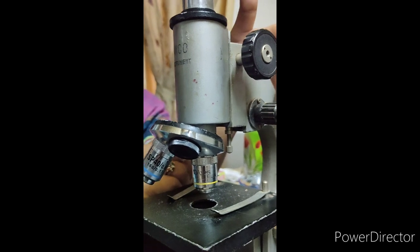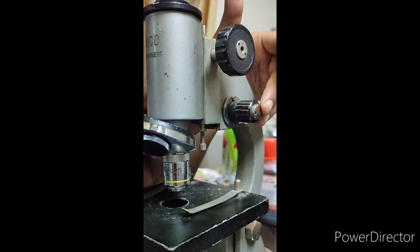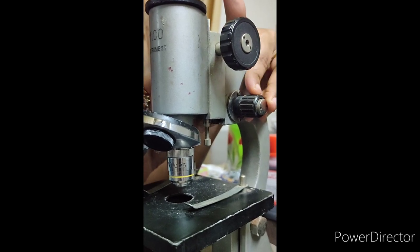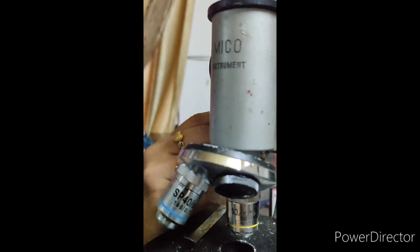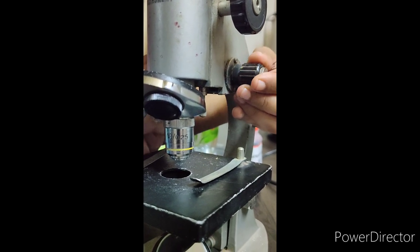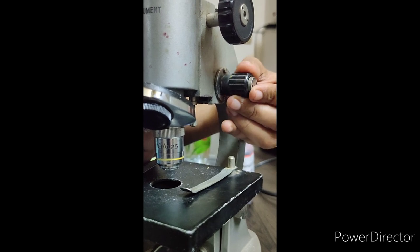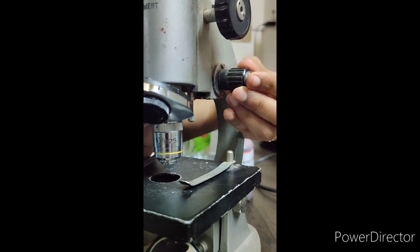And with the fine adjustment knob, I will be able to focus the objective lens. The objective lens can be focused using the smaller knob, known as the fine adjustment knob.